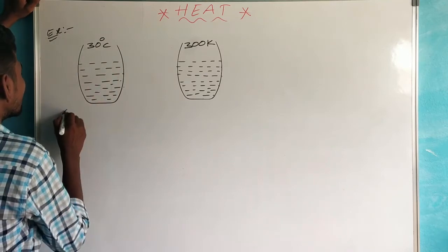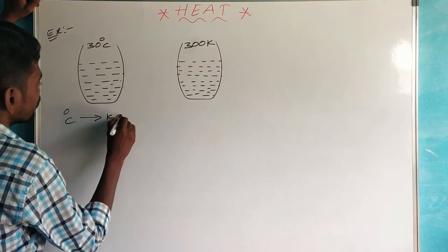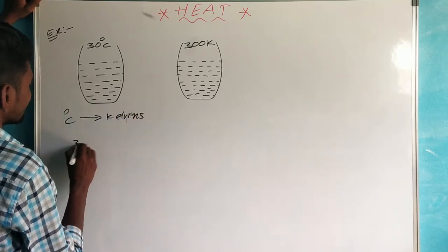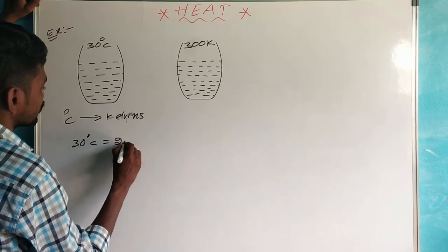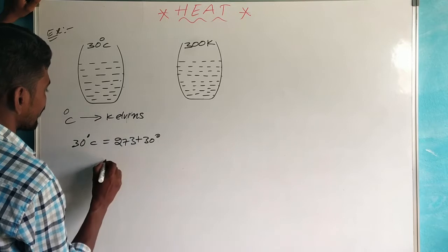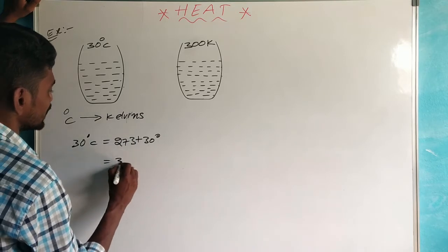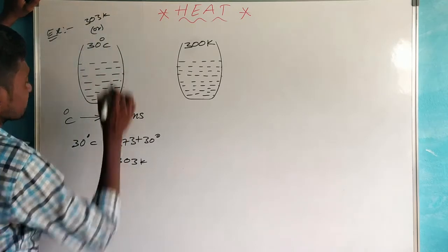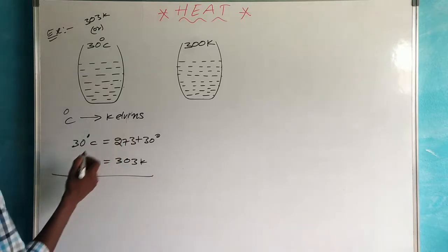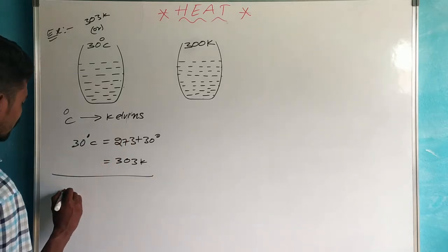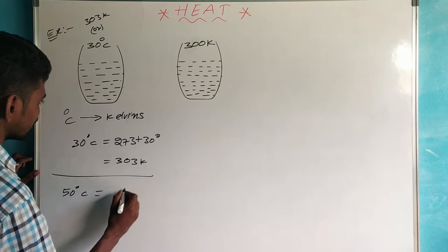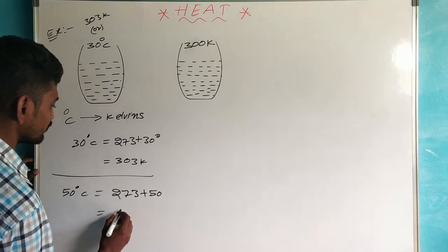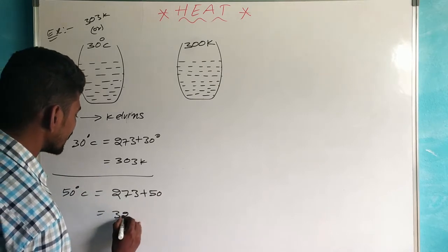We are converting here from degrees centigrade to Kelvin. For example, 30 degrees centigrade is equal to 273 plus 30, which equals 303 Kelvin. And 50 degrees centigrade is equal to 273 plus 50, which equals 323 Kelvin.